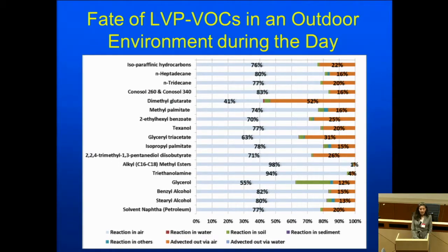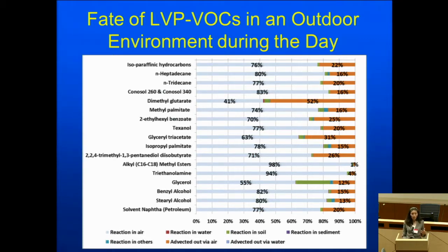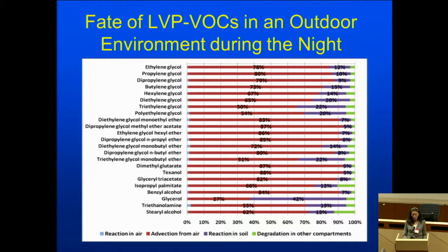There is also some reaction in the soil, generally between 1% and 3%. For the other compound groups — chlorinated hydrocarbon solvents, esters, and other compounds — similar results are seen. Dimethylglutarate has about 50% being advected out, which is the largest advected fraction. Glycerol has the largest portion reacted in soil. But basically, a large portion of what is volatilized during use is going to remain in the air available to form ozone, or be advected to the next compartment downstream.